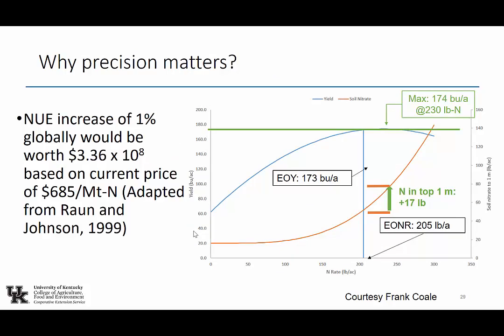A 1% increase in nitrogen use efficiency globally would be worth $336 million, and that money can be reinvested in developing worlds where they need more food. This is a human issue — an issue of social justice. If I'm farming in sub-Saharan Africa, my fertilizer is limited because it's been priced higher because you can afford it in the United States and I can't afford it here. So if we get 1% increase in NUE in the US, we'll see a shift of resources to areas where they need it to offset starvation.